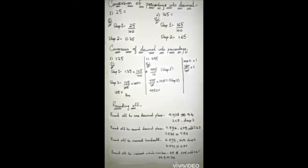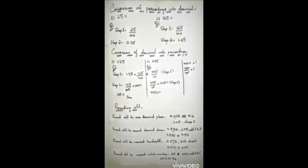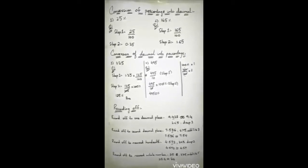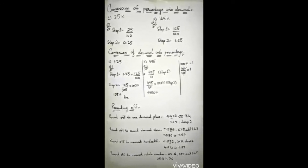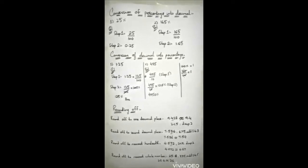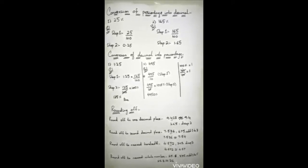Today we are going to discuss conversion of percentage and decimal, and rounding off. The first topic is conversion of percentage into decimal. To convert a percentage into decimal you follow two steps. For example, 25%: step one, you cannot convert directly — you first convert this percentage into a fractional number, then convert it into a decimal number. 25% in step one becomes 25 upon 100, because the percentage sign equals divided by 100.